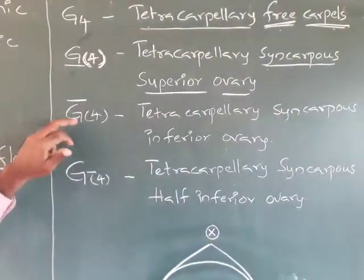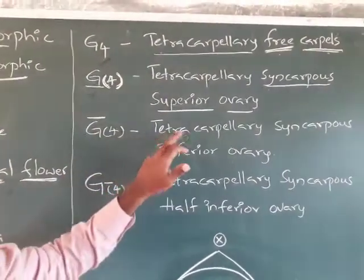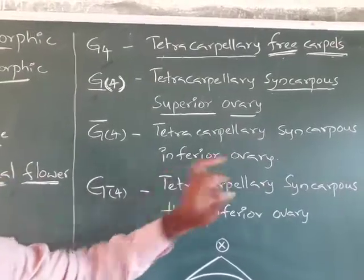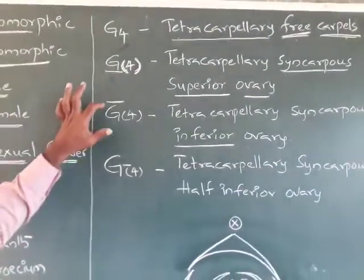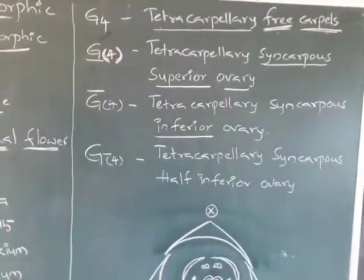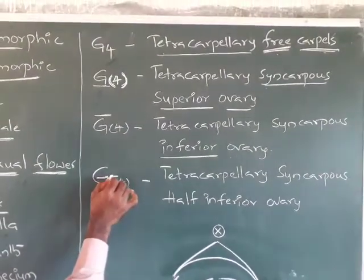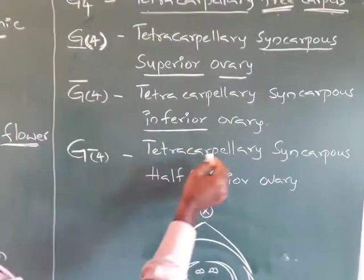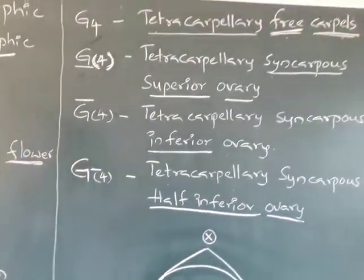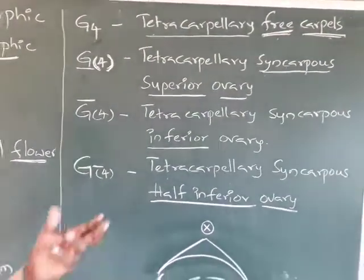If the line is above the G, that indicates tetracarpellary syncarpous inferior ovary. If the line is equal to or at the level of G, it indicates a half-inferior ovary — which can also be described as inferior or superior depending on context.